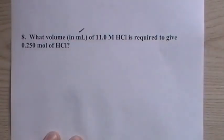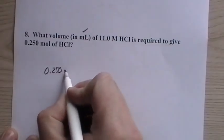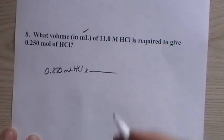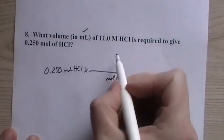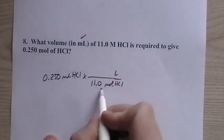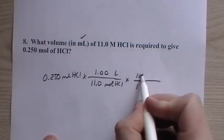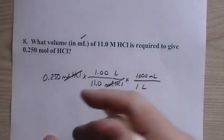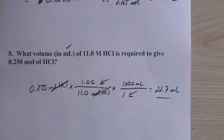What volume in mL? Now we have mL. Of 11.0 molar HCl is required to give 0.25 moles of HCl? So we have 0.25 moles HCl. We want to convert that to mL, but we have moles on the bottom. We convert to liters first, because we have 11.0 moles per one liter of solution. And then for every liter, there's 1,000 mL. So we're going to change moles to liters through the molarity. Liters are changed to mL. So 0.25 divided by 11 times 1,000, and we end up with 22.7 mL of the HCl. So every 22.7 mL of 11 molar HCl contains 0.25 moles of HCl.